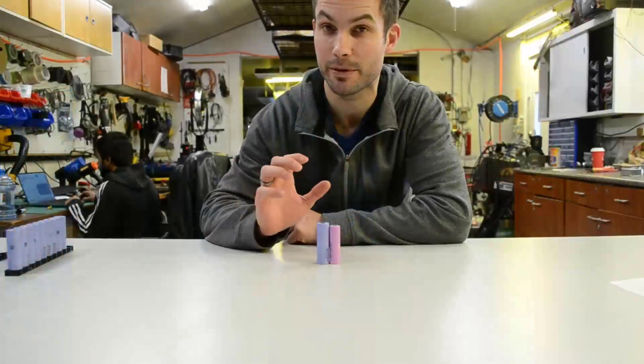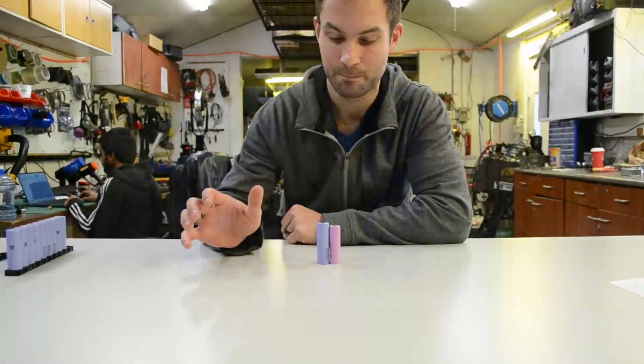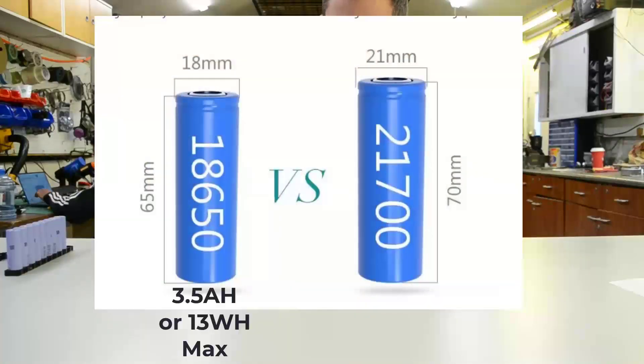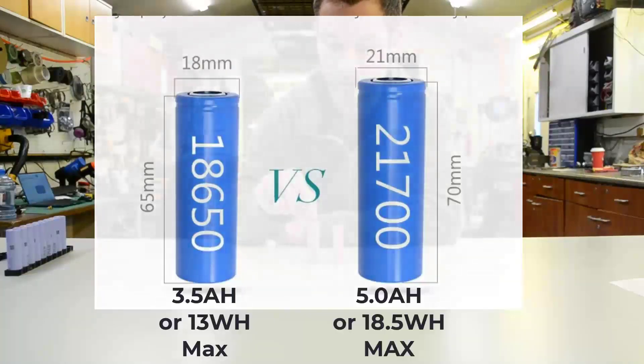2170s have about 50% more capacity of a cell, which, as you can imagine, has really made them much more popular. These peak at about 3.5 amp hours, and these ones peak about 5 amp hours currently.